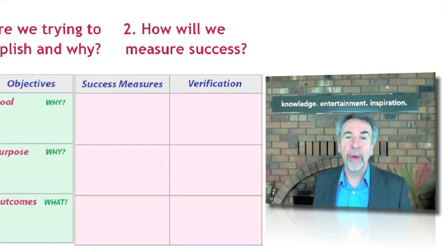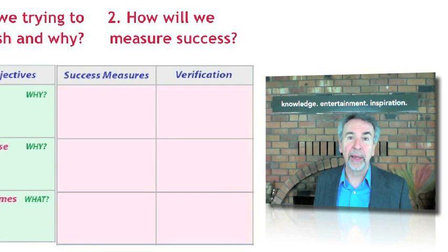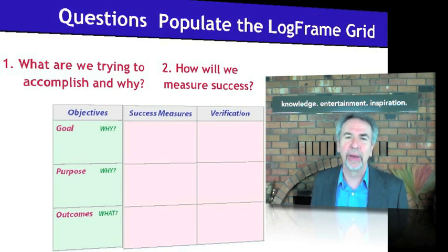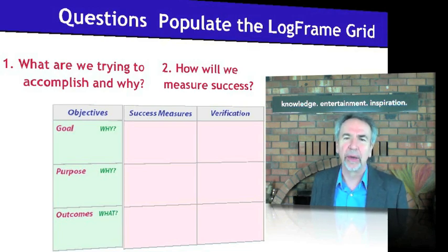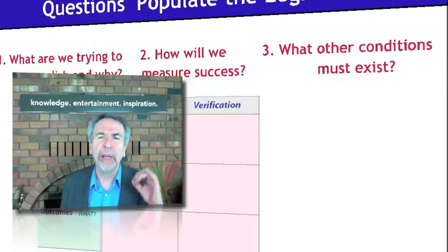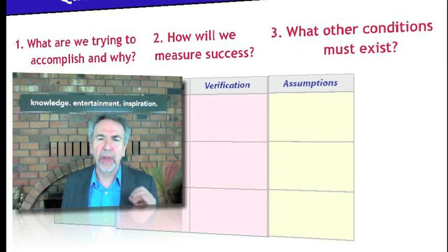We will then ask: how will we measure success at each of these levels? How will we know in advance that we've achieved these objectives? We'll come up with measures — quantity, quality, time, cost, customer — as well as verifications, the means of determining the success measures. Then we're going to ask: what other conditions must exist? What assumptions do we have to make for this if-then logic to be valid?